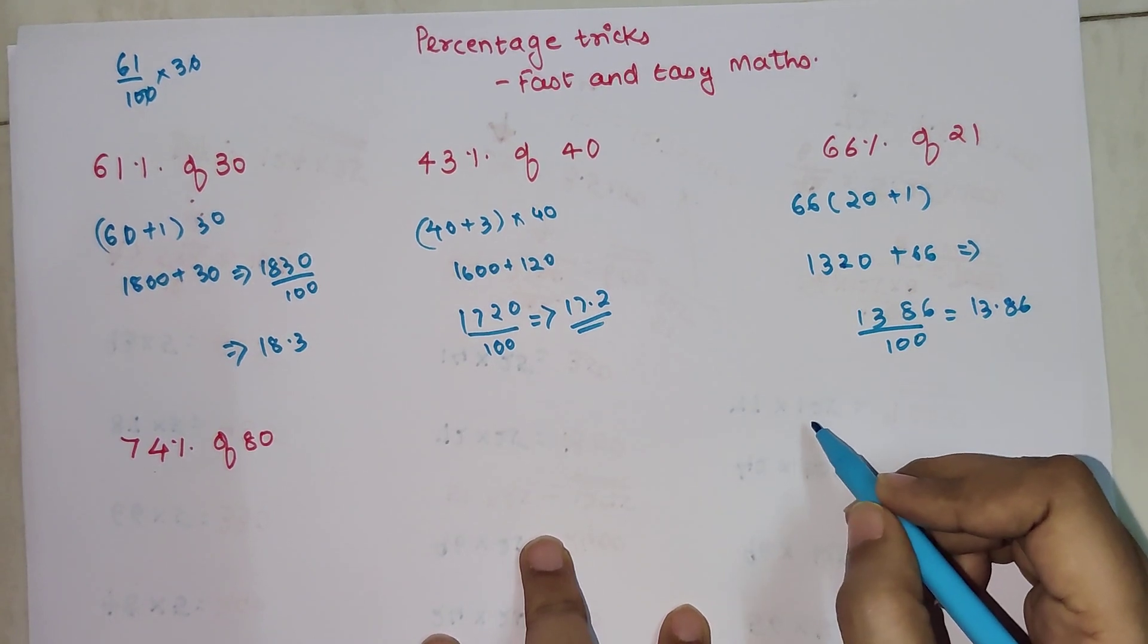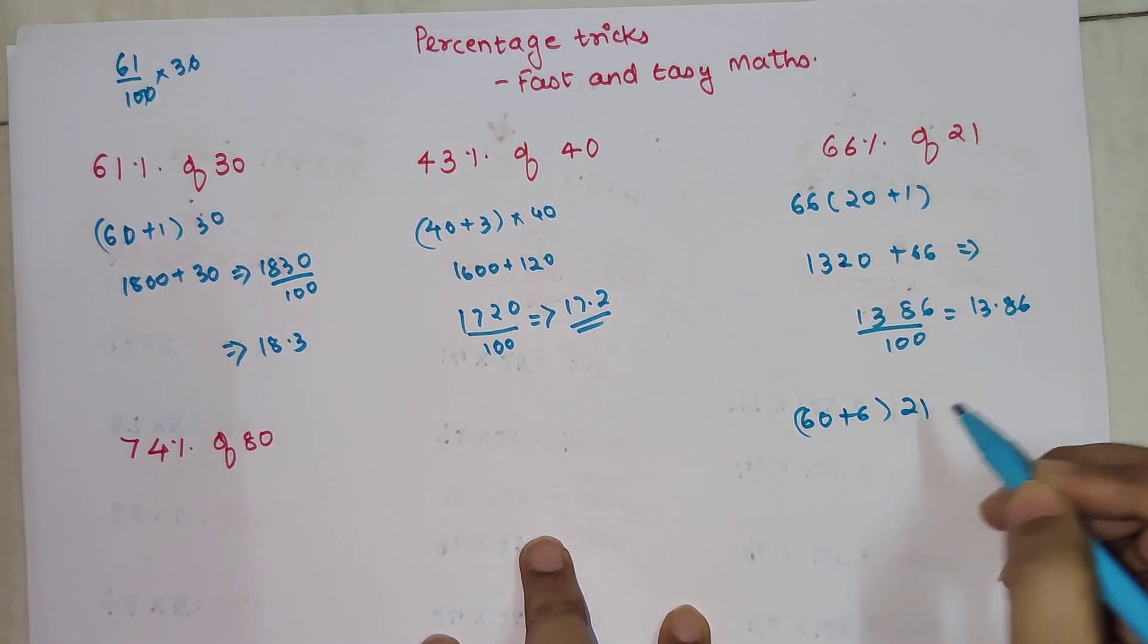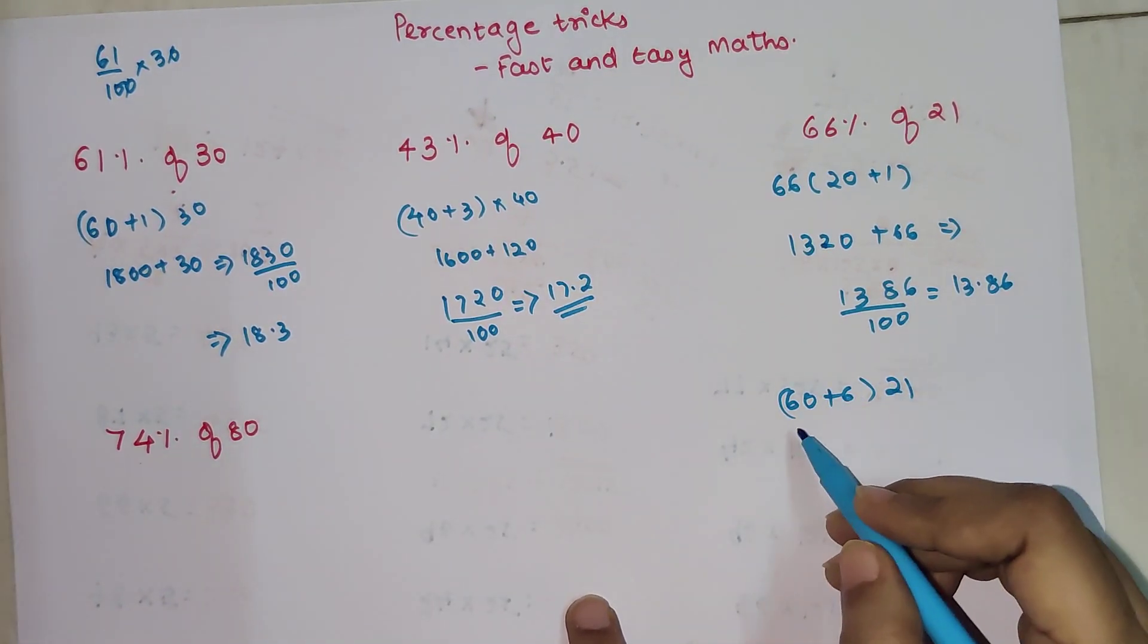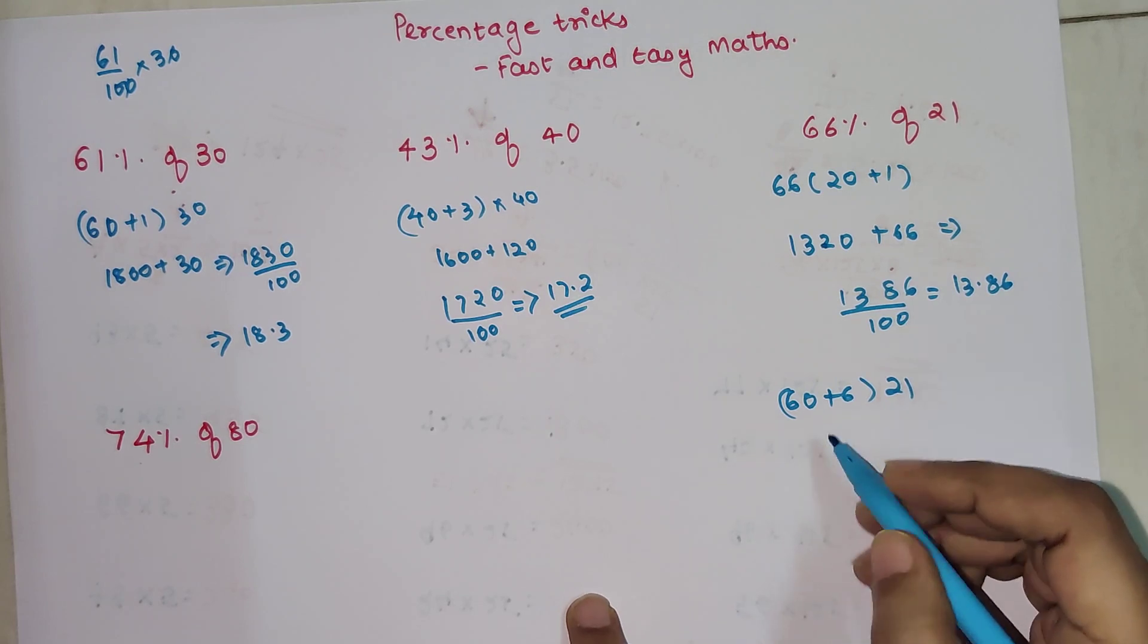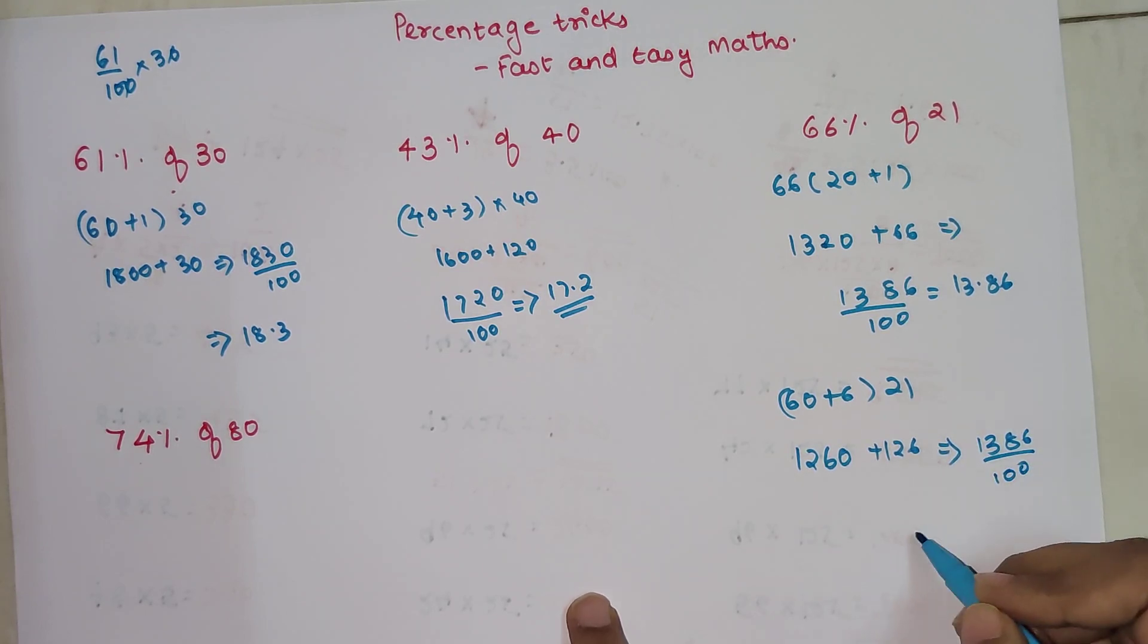Just for your satisfaction, let me do this the other way around. If I have 60 plus 6 into 21, whatever is comfortable you can break them. You will get 60 into 21 is 1260 plus again 126. My answer is still becoming 1386 divide by 100. Final answer is 13.86.